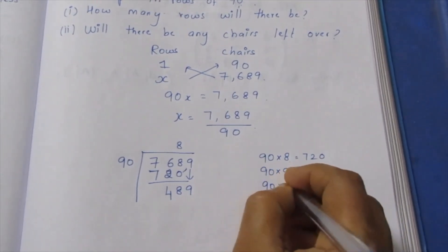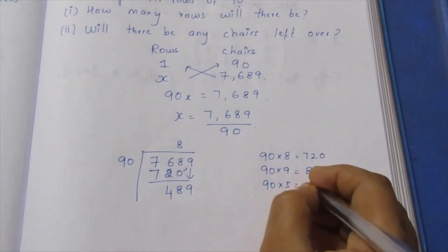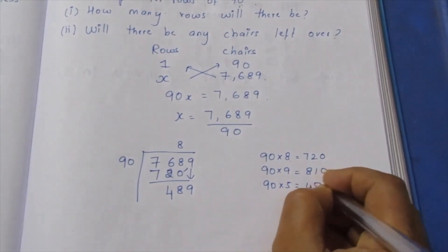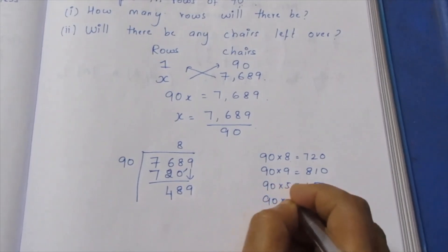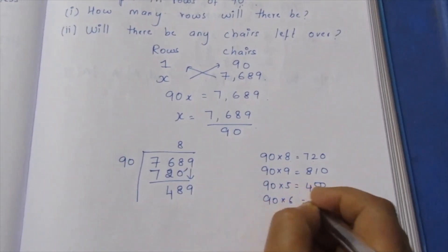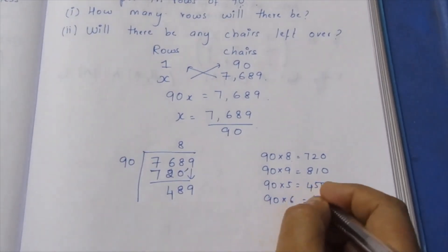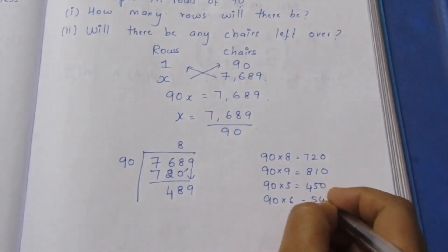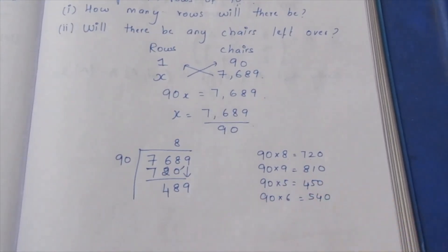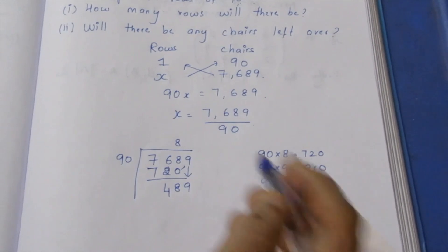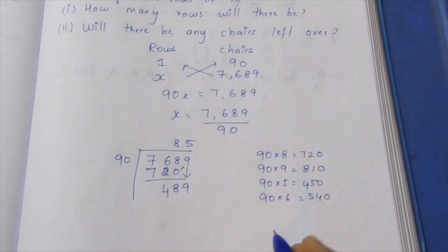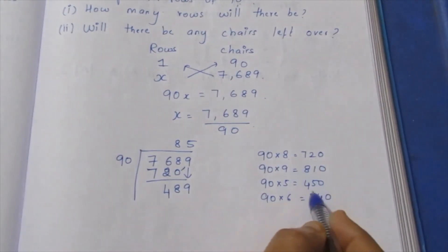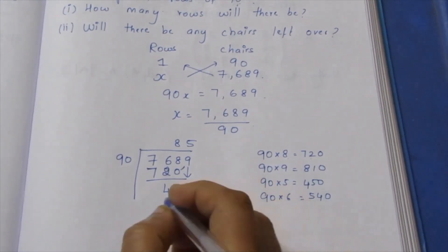90 into 5: 5 fives are 45, giving 450. Try 90 into 6: 54, so 90 into 5 gives 450.